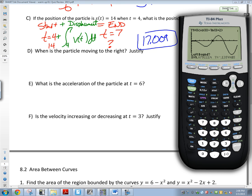So second, zero, left bound, move to the left of it. Enter. Move to the right of it. Enter. Guess. Enter. So 5.107. That's when I first cross the x-axis. Then I'm above the x-axis to there. So second, calculate, zero again. I'm going to move to the left of it. Enter. Move to the right of it. Enter. Guess. Enter. So I stop moving to the right at 7.550.